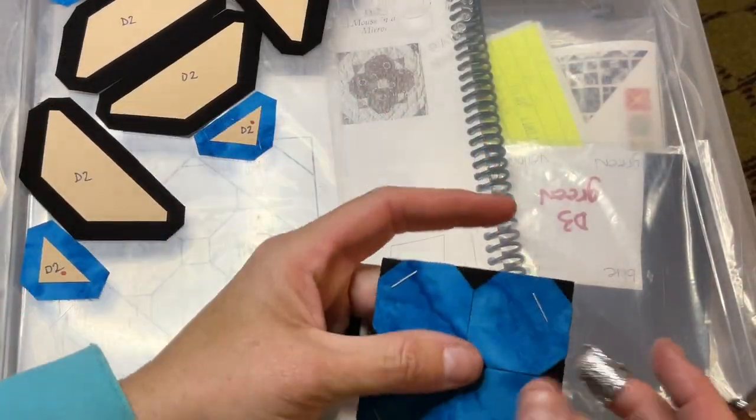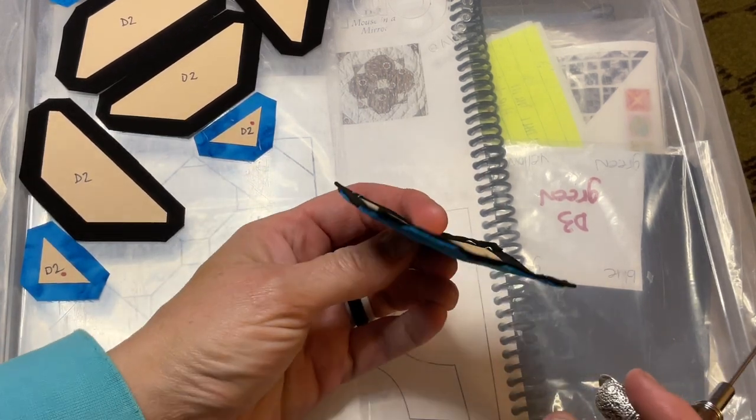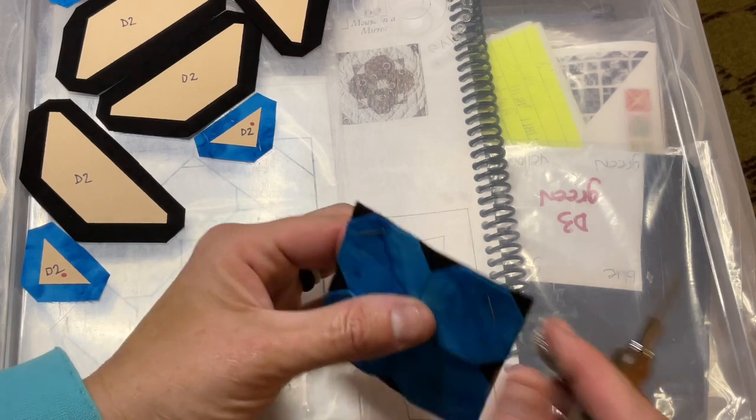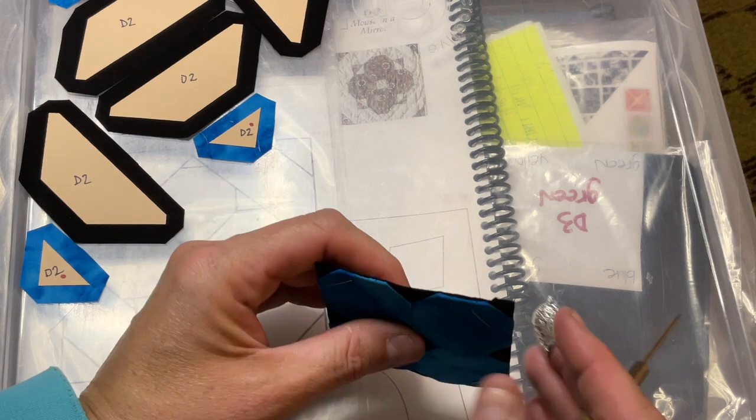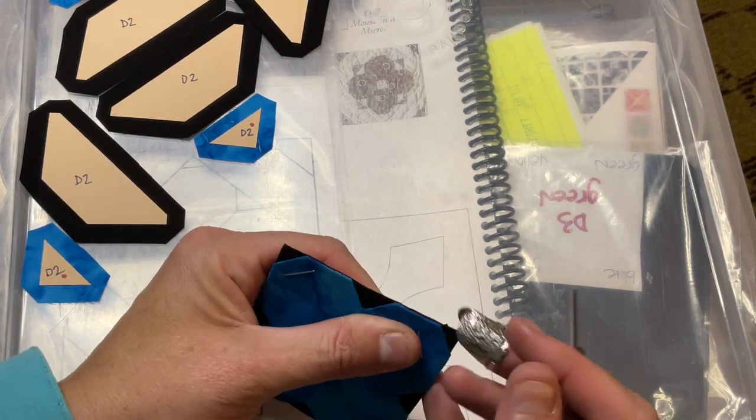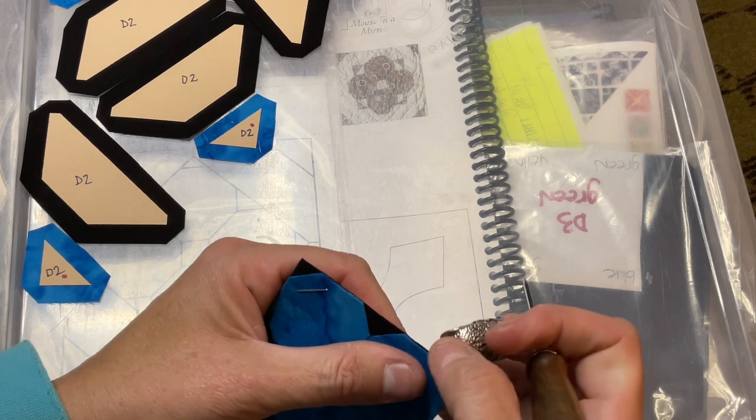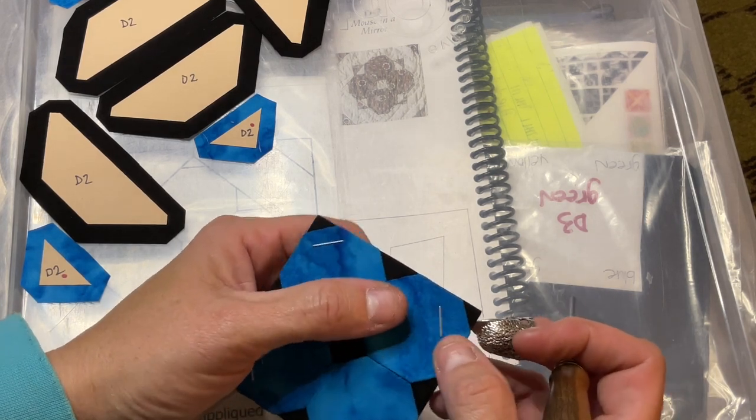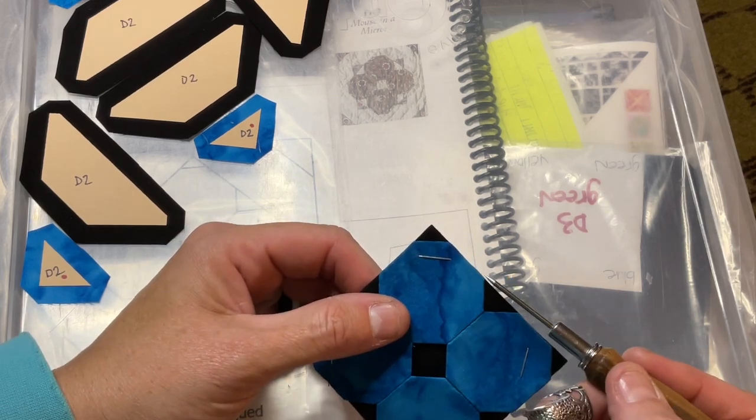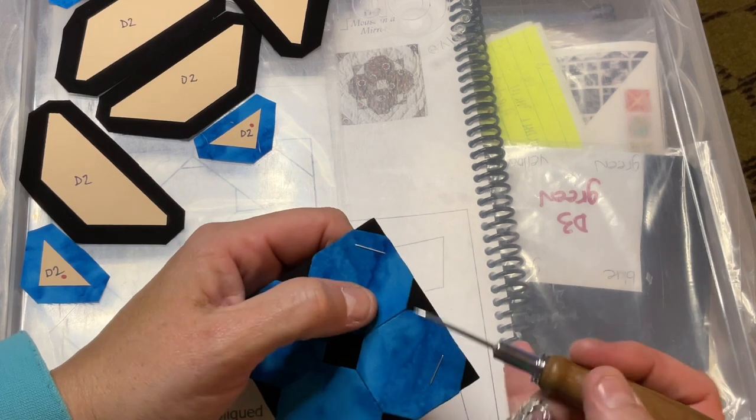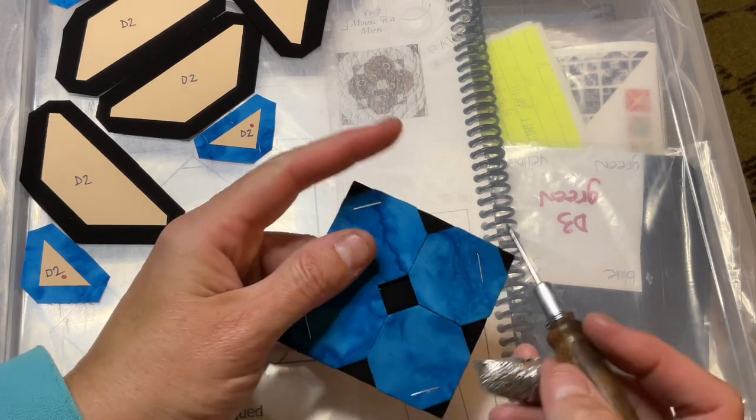So I've got the outside of this applique on and I wanted to point out, this is quite dimensional. And the trick to this, it doesn't matter if it's not flat right now. The trick, the thing that does matter is that these edges need to be as close together and accurate as possible. Because once you take the papers out, it's where the fabric is sewn down, that really matters. So I've got the stitches all around each edge on the very outer edge.